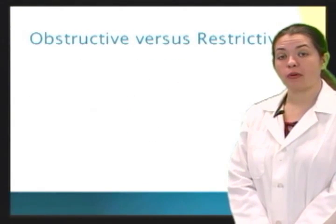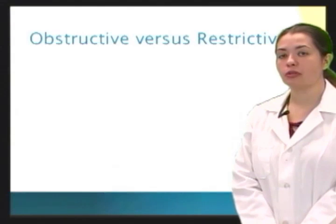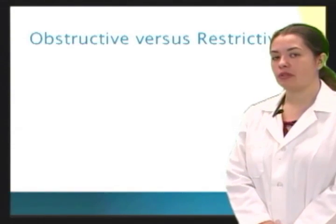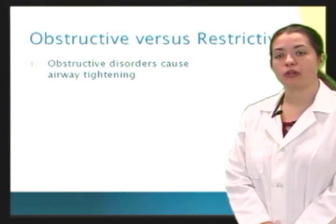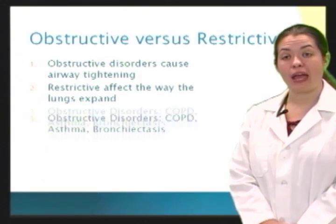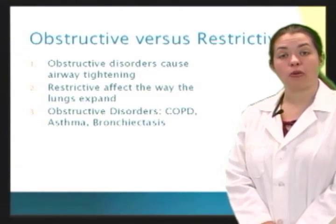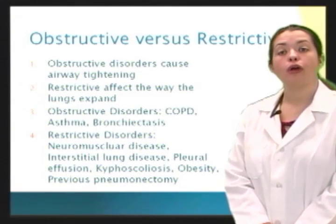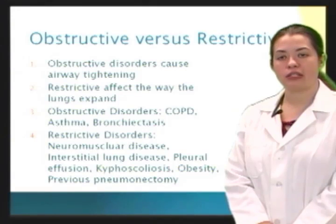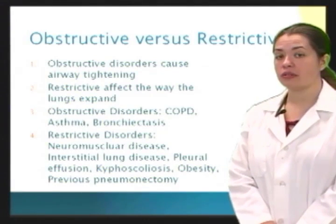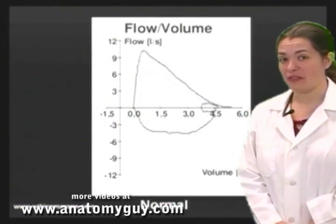Spirometry can also help us determine whether the airflow limitation is an obstructive or restrictive pattern. Obstructive disorders cause airway tightening; restrictive disorders affect the way the lungs expand. Obstructive disorders include COPD (chronic obstructive pulmonary disease), asthma, and bronchiectasis. Restrictive disorders include neuromuscular disease, interstitial lung disease, pleural effusion, kyphoscoliosis, obesity, and previous pneumonectomy. Let's look at a normal curve like the one Dr. Goodmurphy gave us.